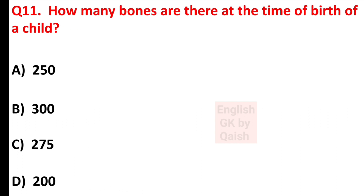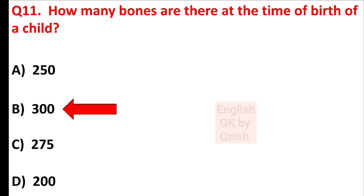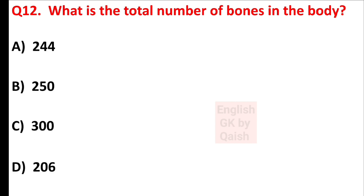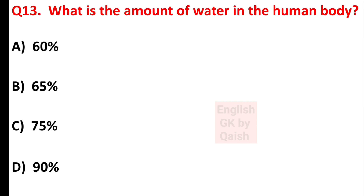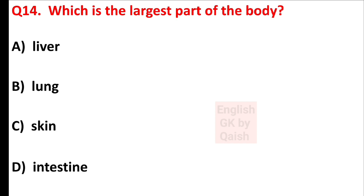How many bones are there at the time of birth of a child? Answer is option B — 300. What is the total number of bones in the body? Answer is option D — 206. What is the amount of water in the human body? Answer is option A — 60%. Which is the largest part of the body? Answer is option C — skin.